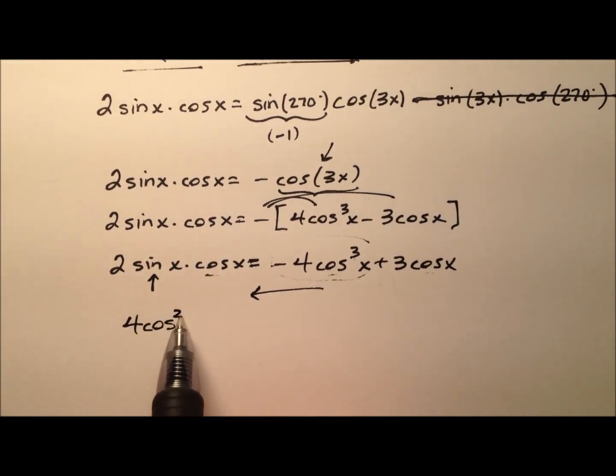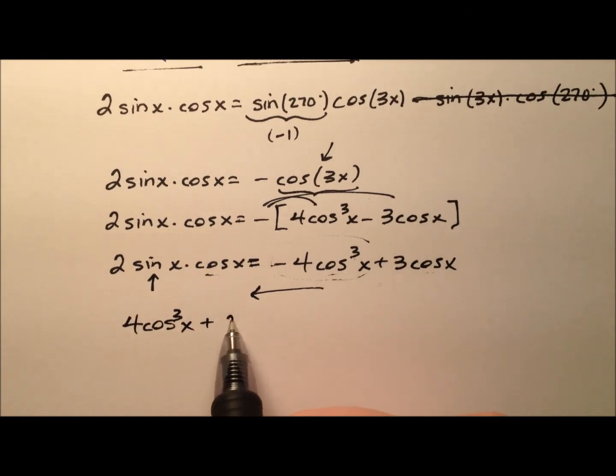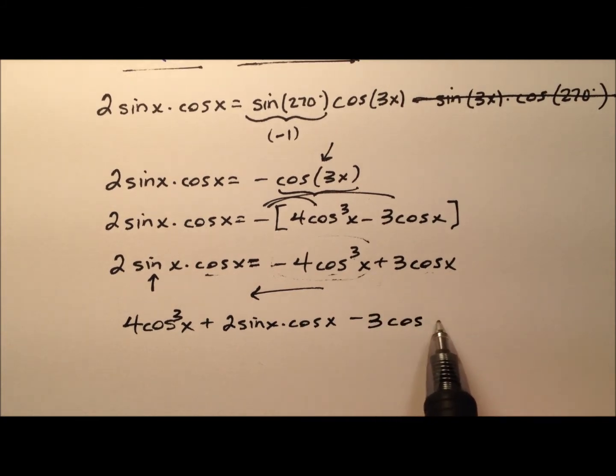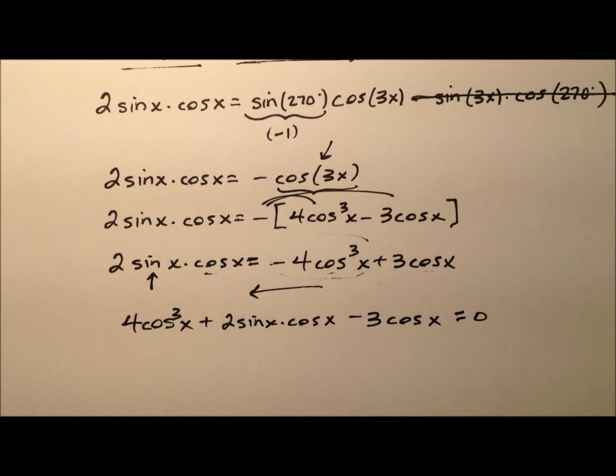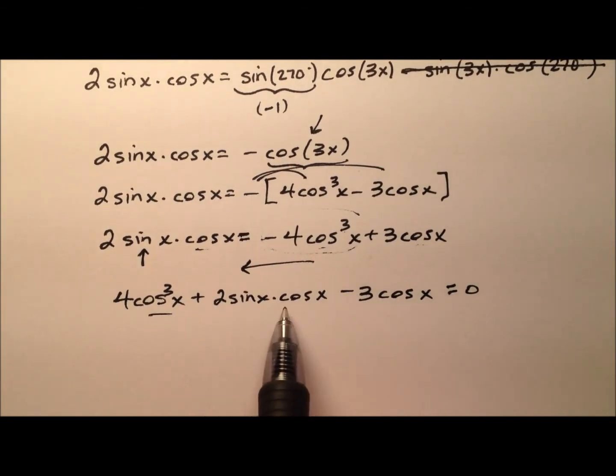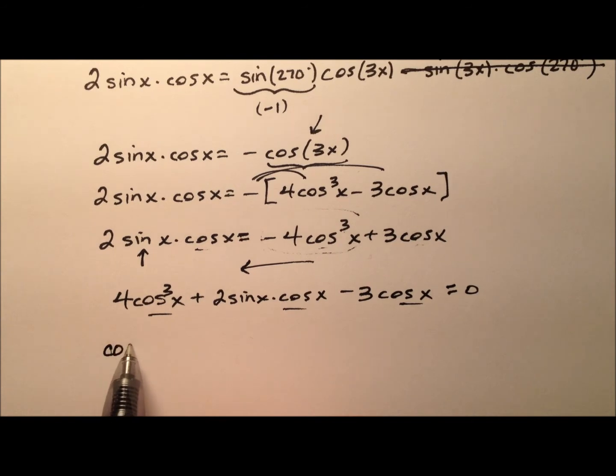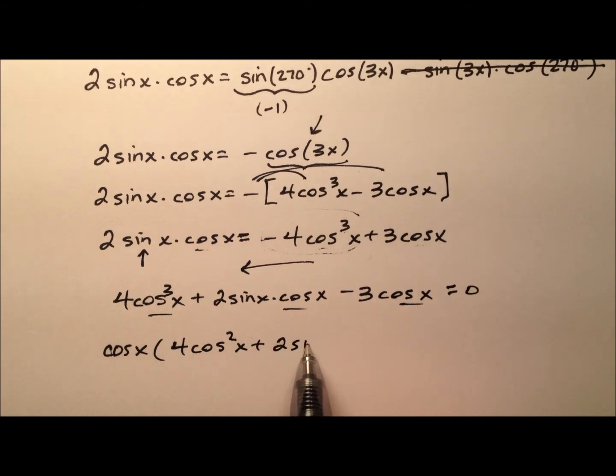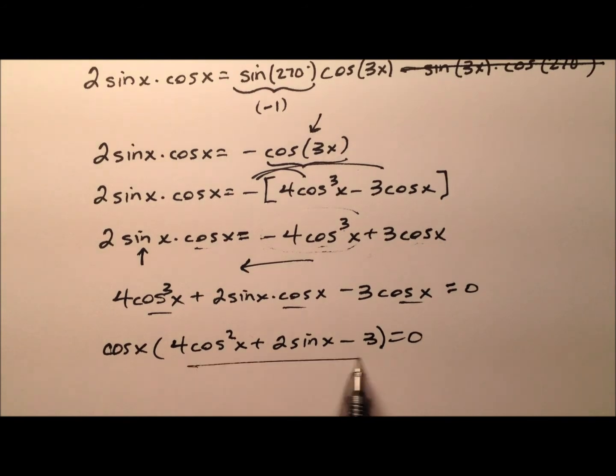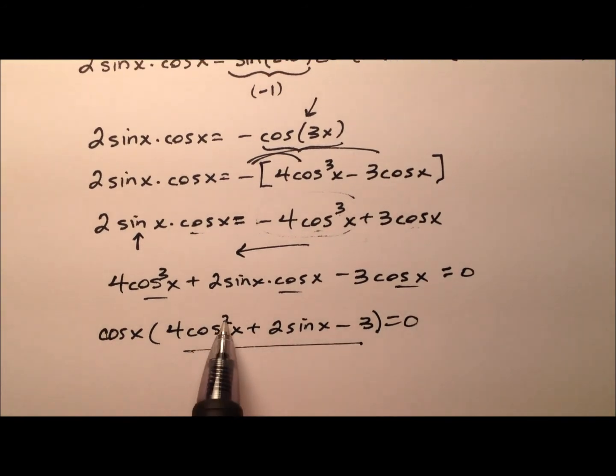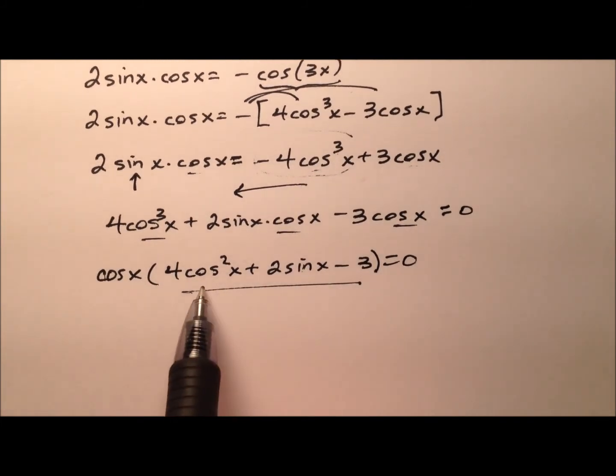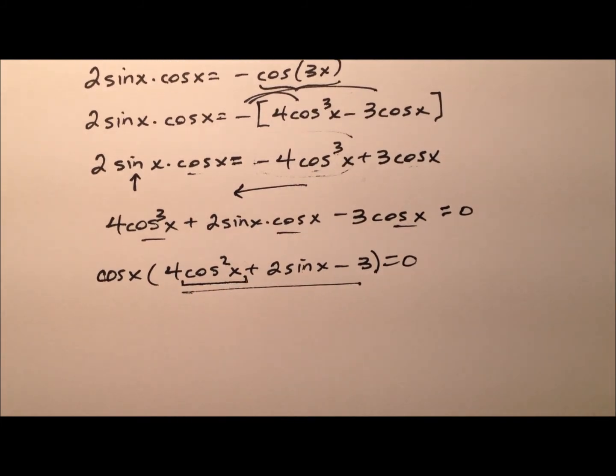So 4 cosine cubed x is positive on the left side, plus 2 sine x cosine x, that was already on the left side. And then minus 3 cosine x, and that's going to equal zero. So it looks like every single term has a cosine. So let's factor that cosine out. And I'm left with 4 cosine squared x plus 2 sine x minus 3. Well, this almost looks quadratic in nature, except this is a cosine squared and that's a sine. So let's use a Pythagorean identity and exchange this cosine squared for a 1 minus sine squared.